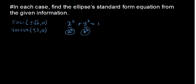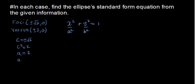This means a squared is greater than b squared. For the foci, the value is c, so c equals positive or negative square root of 2, meaning c squared equals 2. For the vertices, a equals positive or negative 2, so a squared equals 4.